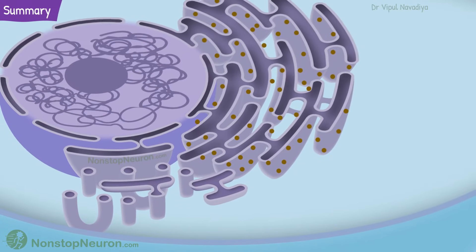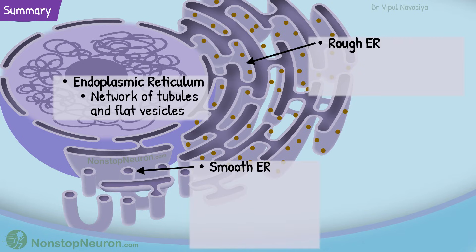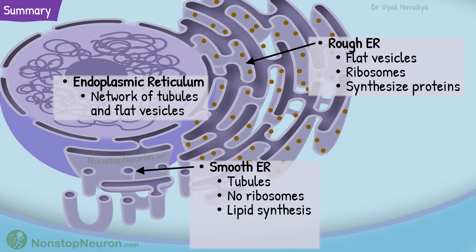Let's have a quick summary. The endoplasmic reticulum is a network of interconnected tubules and flat vesicles, divided into two types. The rough endoplasmic reticulum is a network of flat vesicles containing ribosomes that synthesize proteins to be exported and membrane proteins. The smooth endoplasmic reticulum is a network of tubules with no ribosomes. It is involved in synthesis of lipids, detoxification, and as the sarcoplasmic reticulum, it stores calcium.